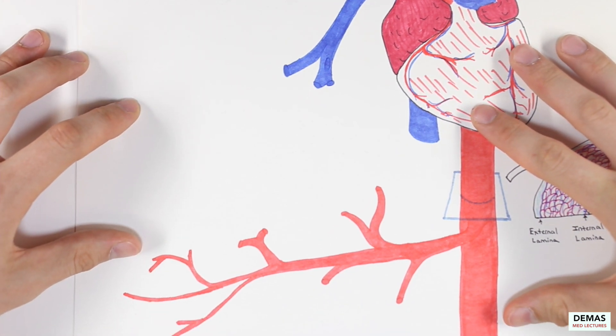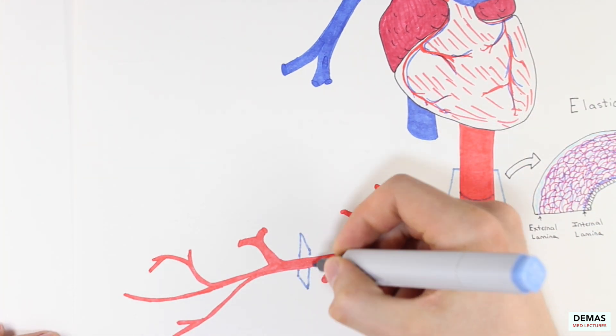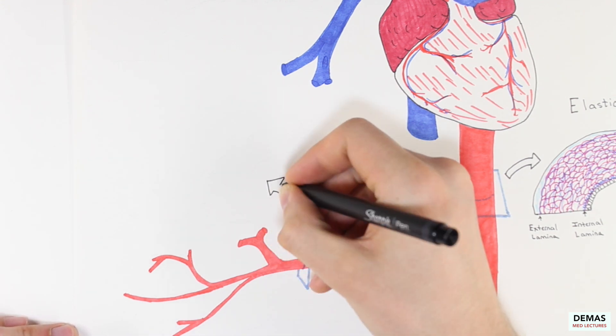Now let's take a look at the makeup of muscular arteries, which comprise the outbranching of elastic arteries. The overall thickness of the muscular arteries is thinner than that of elastic arteries, as the blood pressure is less in this part of the body.